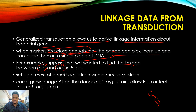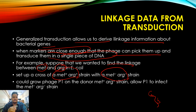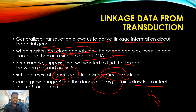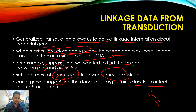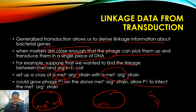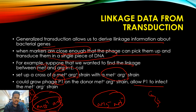So what we have to do is set up a cross: we use a methionine-positive and arginine-positive donor strain, and on the other side a methionine-negative and arginine-negative recipient strain. We grow phage P1 on the donor methionine-positive and arginine-positive strain, and allow P1 to infect the methionine-negative recipient. Here you have a bacterium that is methionine-positive and arginine-positive, and another bacterial strain that is arginine-negative and methionine-negative, which is then infected by bacteriophage P1.